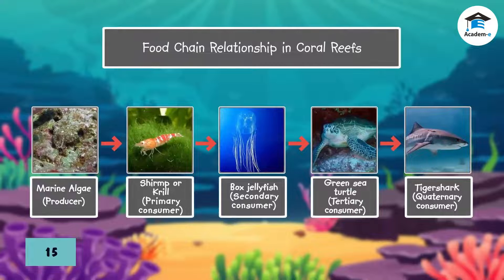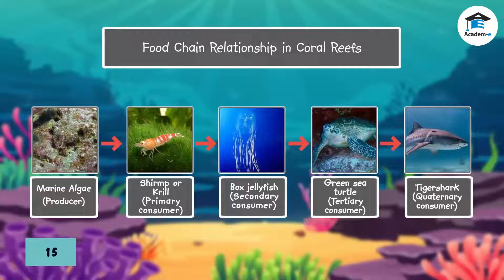Feeding relationships in coral reefs often start with marine algae. They are the producers, along with the other marine plants. In one observable food chain, krill or shrimps eat marine algae or phytoplankton. Shrimps and krill are prey of box jellyfish, which will later be eaten by a green sea turtle. Tiger sharks are quaternary consumers that prey on green sea turtles.